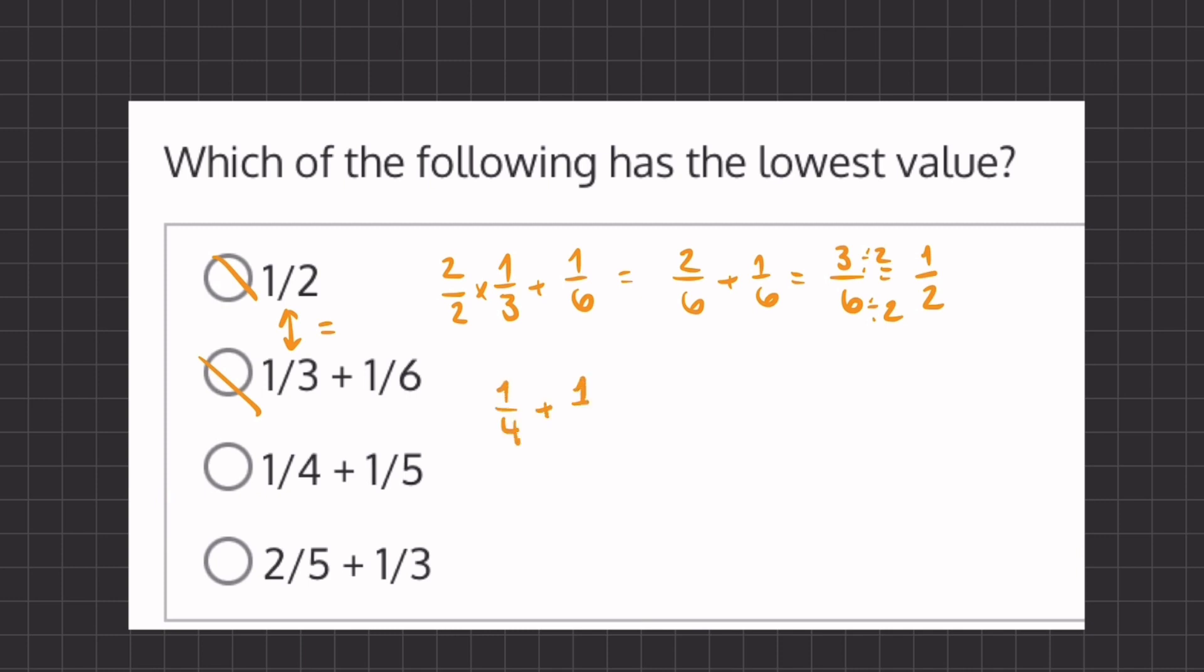Now let's move on to one-fourth plus one-fifth. Our least common denominator here will be 20, so we'll multiply the four by five and also the numerator by five. Here we'll multiply by four on the top and bottom.